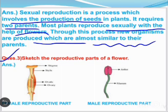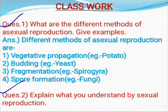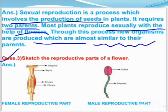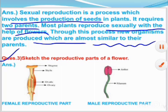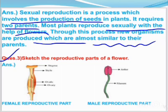Now come to the third question, which is: sketch the reproductive parts of a flower. This is the male reproductive part of the flower. The male and female reproductive parts of the flower we will discuss in our next video. In the male reproductive part, only two parts are involved, which are anther and filament. Details of male and female reproductive parts will be discussed in the next video.